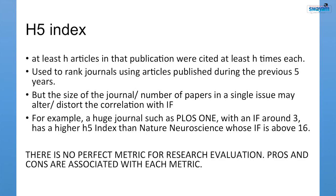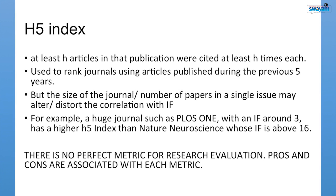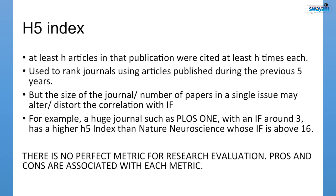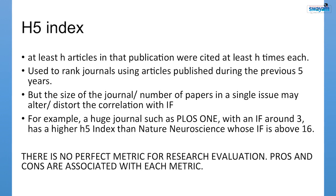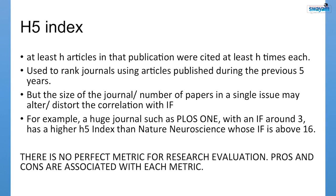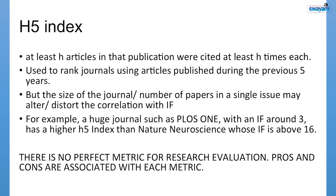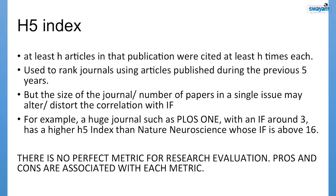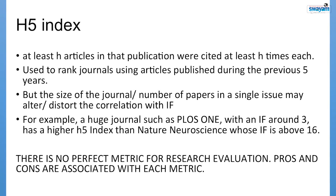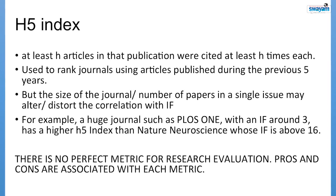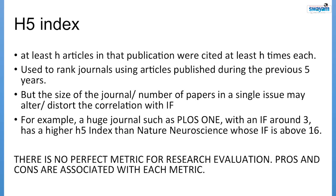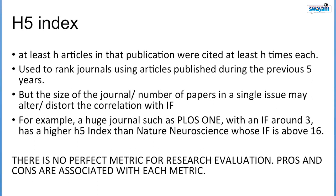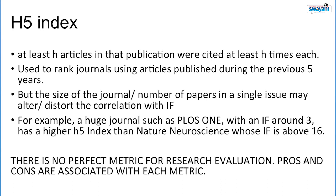Moving to the last metric: H5 index. It is a journal-level metric where at least H number of articles from a journal are cited at least H times. The '5' refers to a 5-year window. H5 index covers the 5-year span of citation potential — in a particular year, we calculate how many papers from the last 5 years have at least H citations. This gives a measure of journal credibility. However, H5 index is dependent on frequency — if a journal publishes a large number of articles per issue, its H5 index may be higher than a journal with a higher impact factor. For example, PLOS ONE has a higher H5 index than Nature.